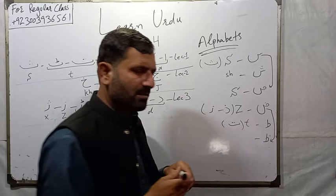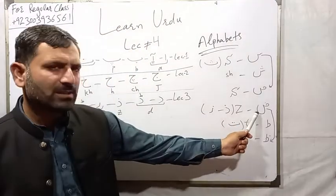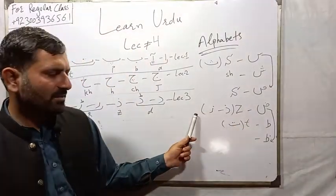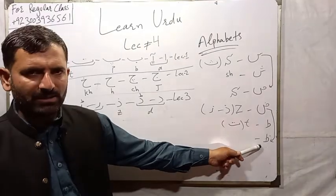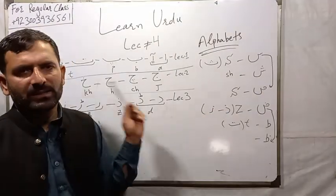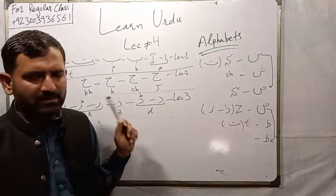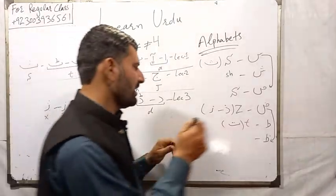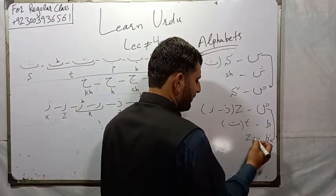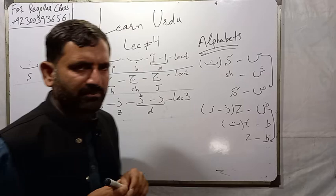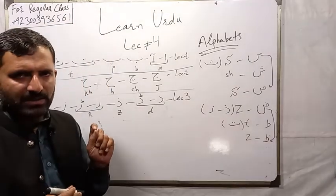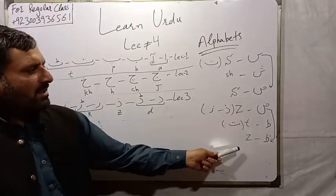It means Zoad, Zal, Ze, and Zoe - all four letters have the same sound, pronounce as Za.